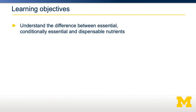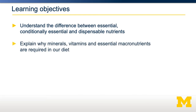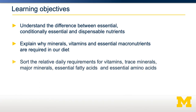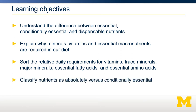In this video, we're going to talk about the difference between essential, conditionally essential, and dispensable nutrients. We'll talk about why vitamins, minerals, and essential macronutrients must be obtained in our diet. I'll ask you to sort the relative approximate requirements of vitamins, trace minerals, major minerals, essential fatty acids, and essential amino acids. By the end of this video, you should be able to classify nutrients as absolutely versus conditionally essential.